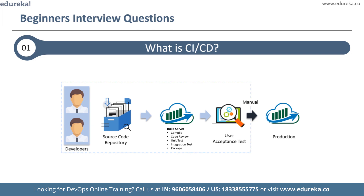Continuous delivery is a process where you build software in such a way that it can be released to production at any time. An automated build script detects changes in the source code management tool like Git. Once detected, the source code is deployed to a dedicated build server to ensure the build is not failing and all tests are running fine. The build application is then deployed on pre-production test servers for user acceptance testing, and finally the application is manually deployed on production servers for release.